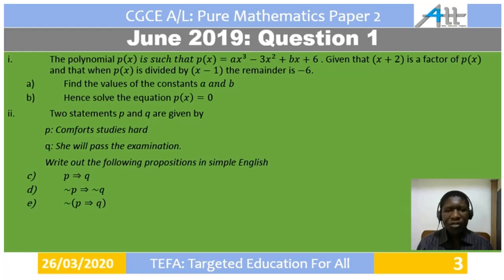Sub 2. Two statements P and Q are given by P: Comfort studies hard, and Q: she will pass the examination. Write out the following propositions in simple English. C: P implies Q. D: not P implies not Q. E: not of P implies Q.